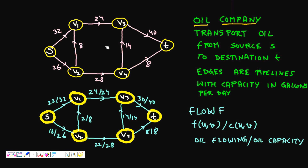Each pipeline has a maximum capacity. You are the manager and you are asked: in which pipelines should I put how much oil so that I can pump the maximum amount of oil to the destination city? This is the maximum flow problem. The graph represents a network where edges are pipelines, each with some capacity.